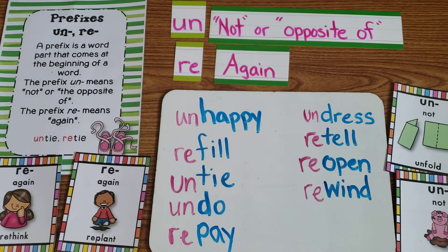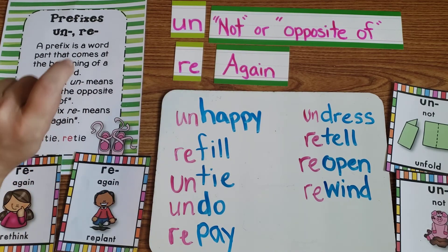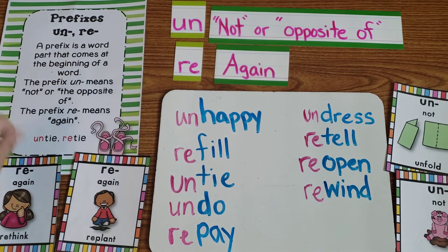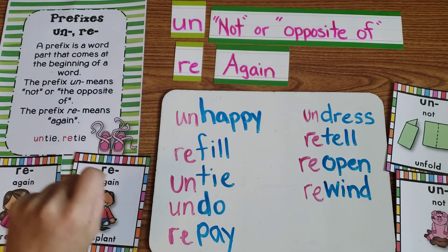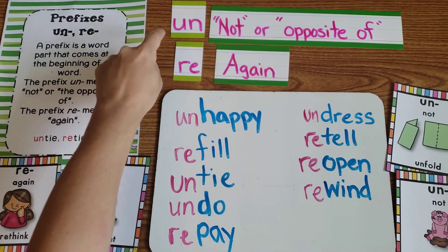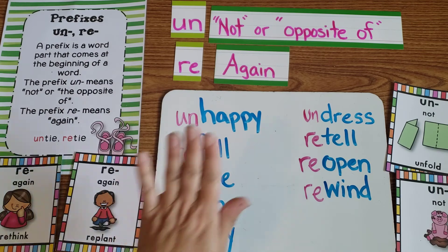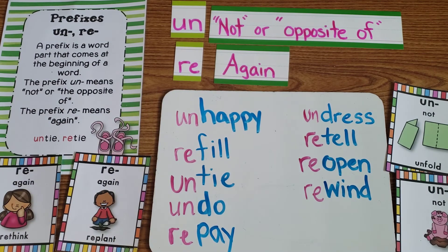So those are our spelling words that have our prefixes — I keep saying 'suffixes' but I mean prefixes. Remember: prefix comes at the beginning of the word, and 'pre' itself means before. So our 'un' and 're' are our prefixes. We also have some spelling words that are not part of the spelling pattern but are still on our list from the high frequency word list.